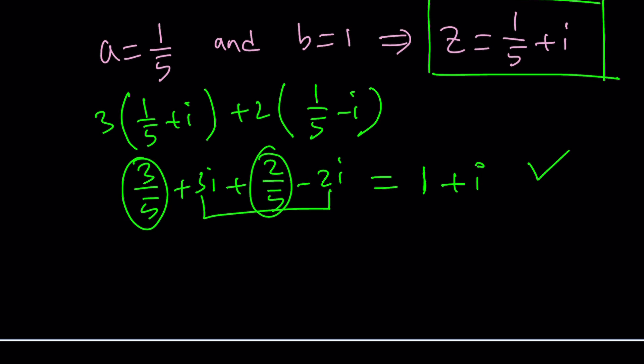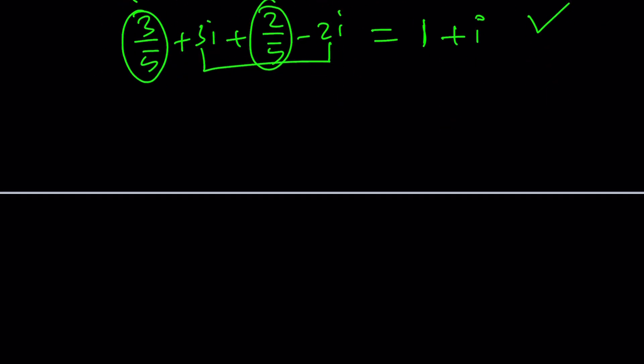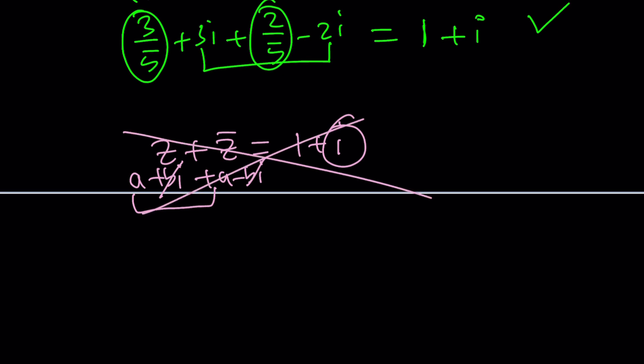Some equations have no solutions. You could probably find an equation like z + z̄ = 1 + i. This equation would not have any solutions, even in the complex world, because bi and -bi cancel each other out, leaving us with a real number, but we have a non-real number on the right-hand side, which is not going to work.